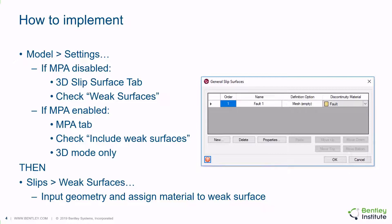It should be noted that this functionality is only available in the analysis of 3D models. Subsequently, the user must proceed to the slips weak surfaces dialog, and then the geometry and the material properties can be entered for each weak surface.